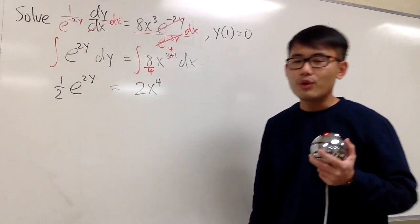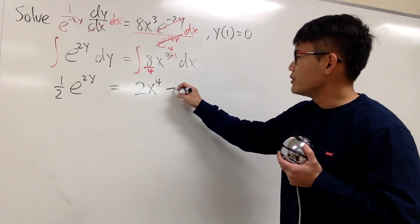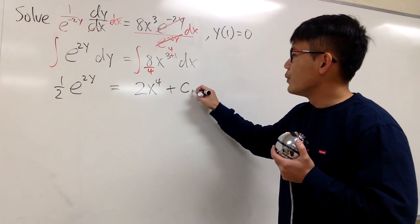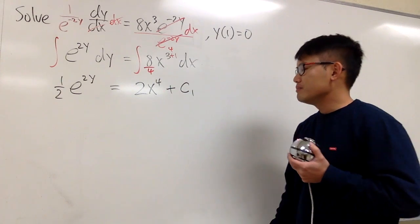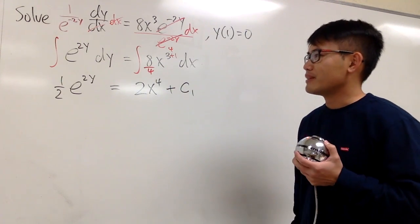8 divided by 4 is 2. So we have 2x to the fourth power. And right here, I'm just going to put down plus c. So maybe c1 or c2, doesn't really matter. Up to you.